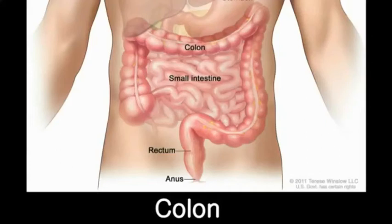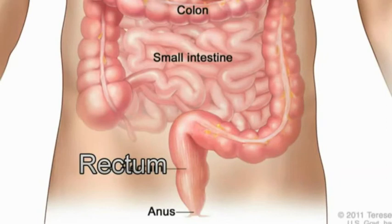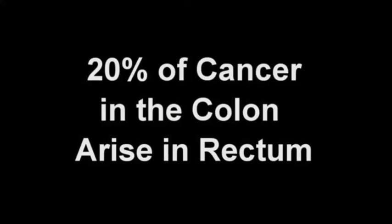The colon is a part of the digestive tract that connects the stomach and small intestine to the anus. The terminal portion of this colon is called the rectum, spanning approximately 12 cm in length. About 20% of all cancers that occur in the colon arise in this rectum.